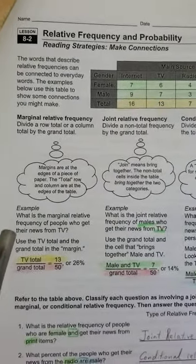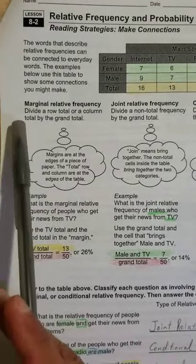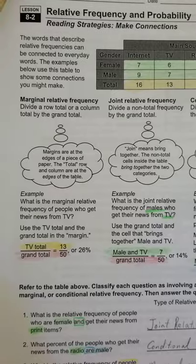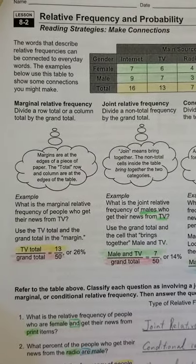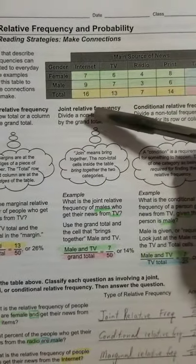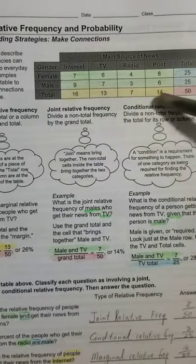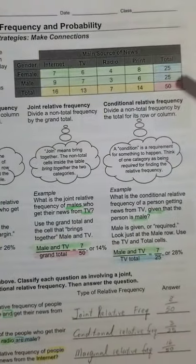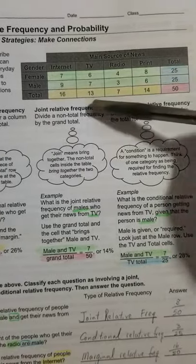There are three types of relative frequency we can look at. The first type is called marginal relative frequency. Marginal means you look at the frequency on the margin. On the table, margins are usually the ones furthest on the edge - the bottom row and the right column, shown in blue and yellow.